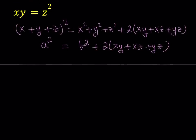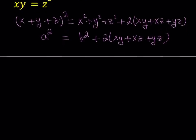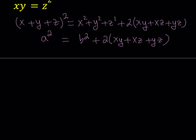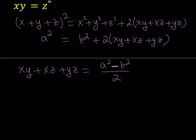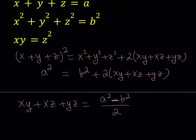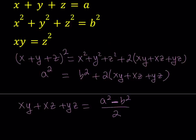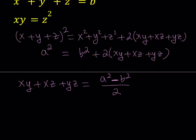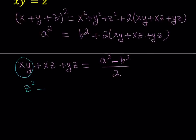I have a separate video on Vieta's formulas, which I'll link below if you're not familiar with them. From squaring the sum, I can subtract B² and divide by two, giving me XY+XZ+YZ = (A²−B²)/2. That's the sum of the two-way products. Now, notice that the third equation in the problem involves XY, and we have XY in our sum, so we can replace XY with Z². Let's go ahead and do that: Z²+XZ+YZ = (A²−B²)/2.